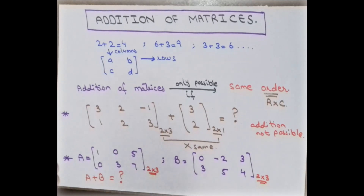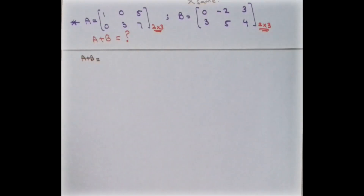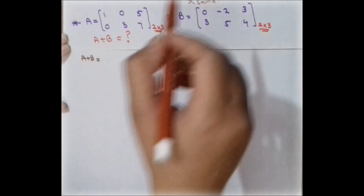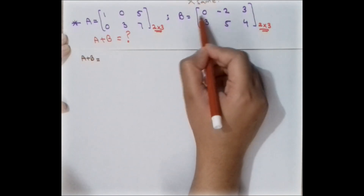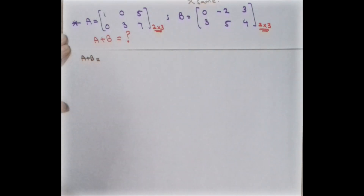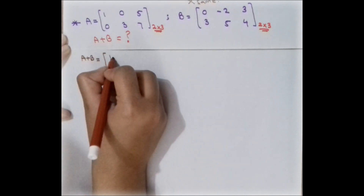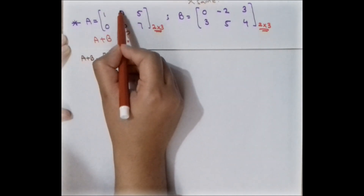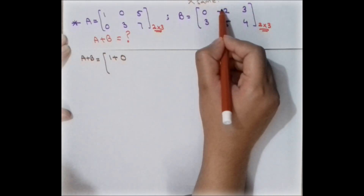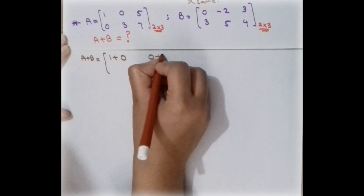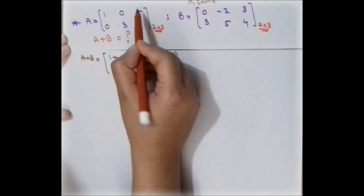Since the orders of both matrices are the same, the addition is possible. To add two matrices, simply add the corresponding entries — that is, add elements at the same position. The element in the first row and first column of one matrix is added to the element in the first row and first column of the other. So we add: 1 plus 0, then 0 plus minus 2, then 5 plus 3.